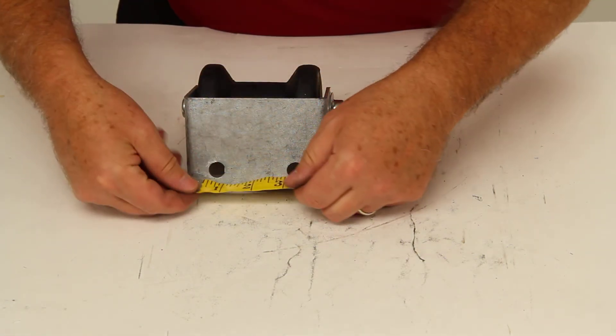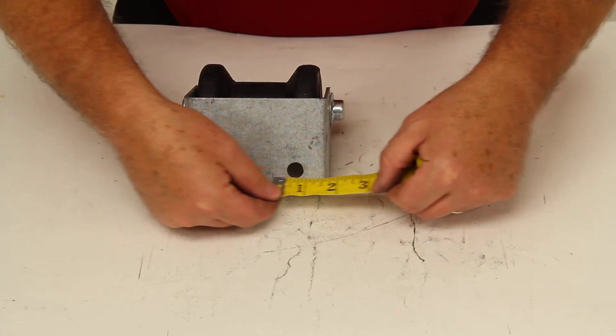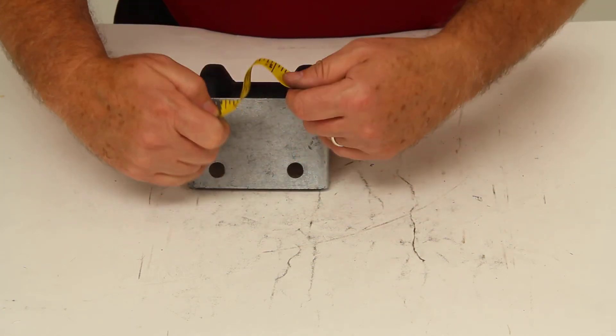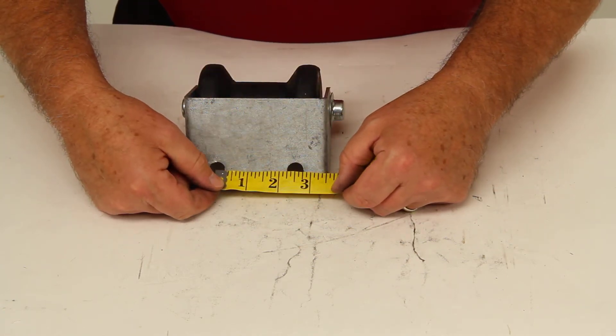The diameter on these mounting holes is a half an inch, and the distance from center to center of each hole is 2-1/2 inches.